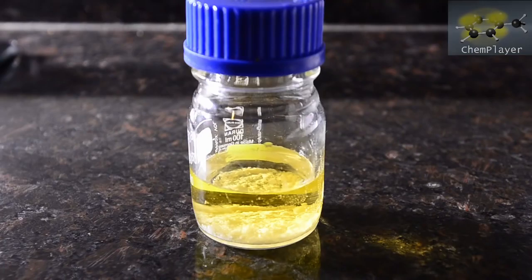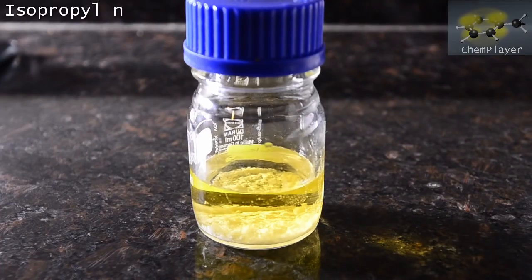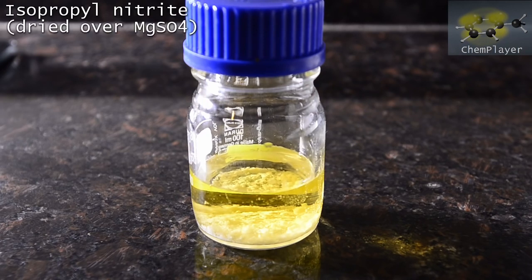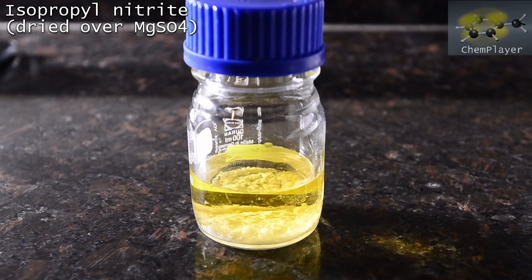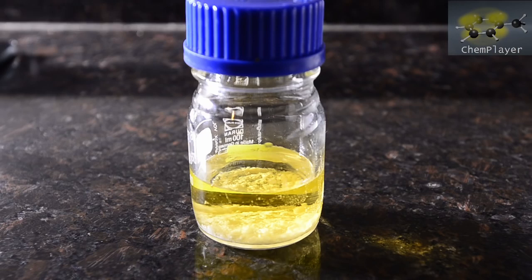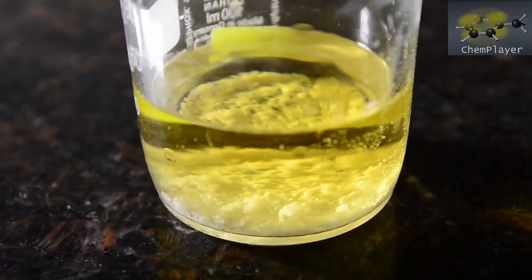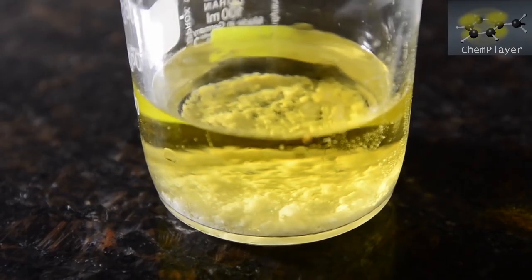We're going to need an organic nitrite ester for the reaction in a 1.2 molar ratio to the hydrazine. We're using isopropyl nitrite which we prepared in a previous video. Check it out for more information about how to make this. We've got ours drying over some anhydrous magnesium sulfate.